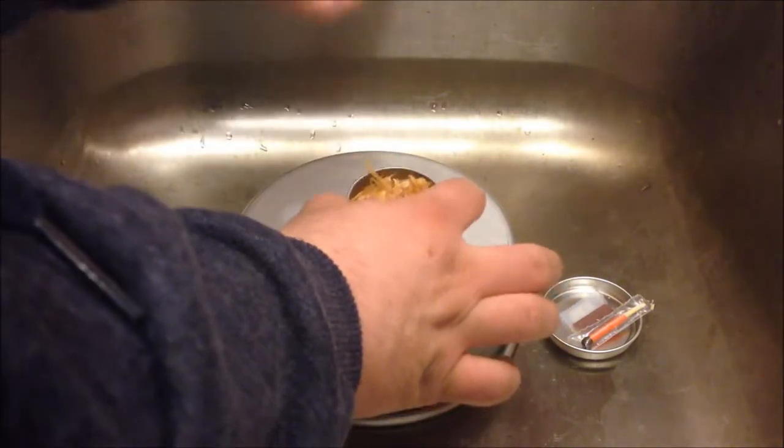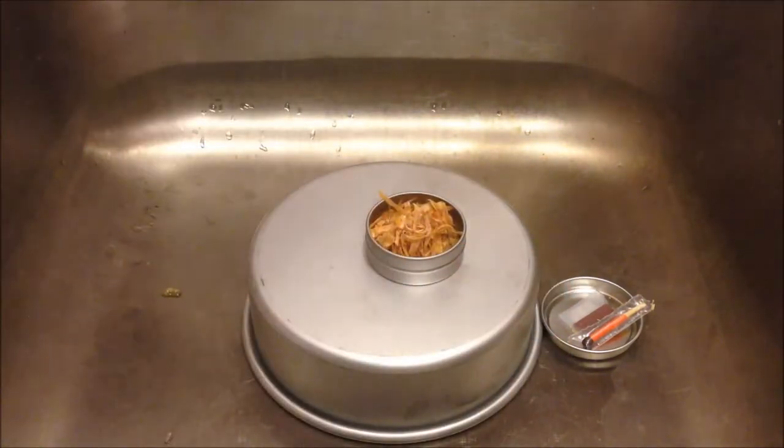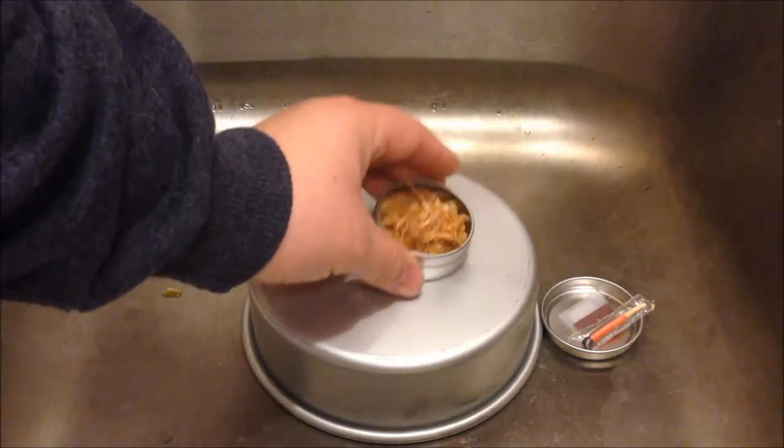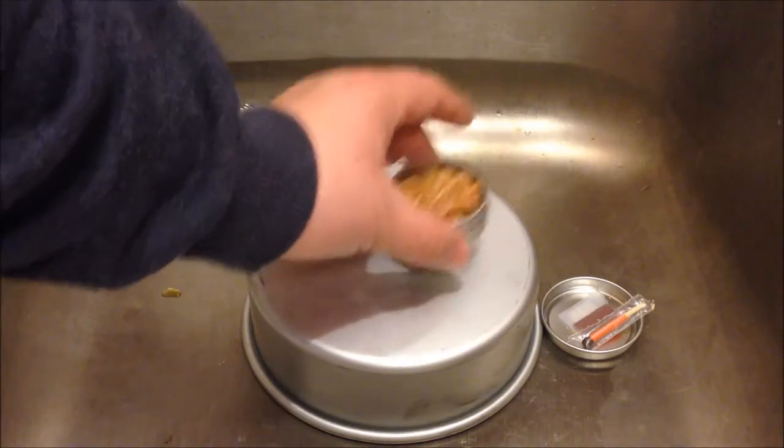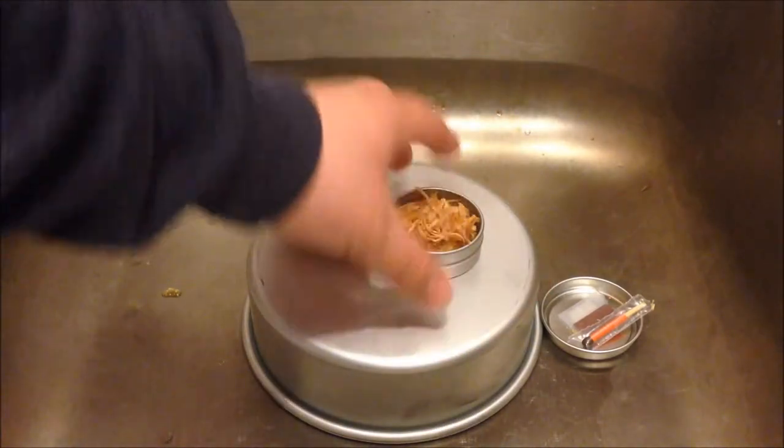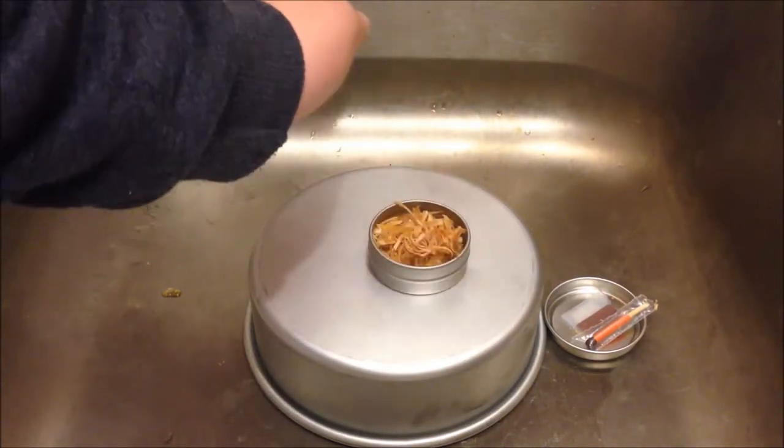All right, so what you would do is once you have all of your fire building material, you would take your tin with the material in it and you would place it at the base where you're starting your fire.